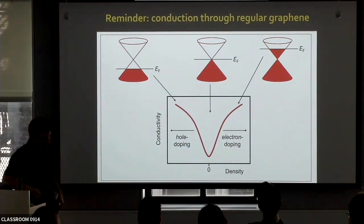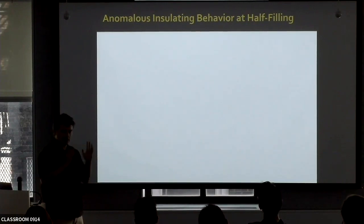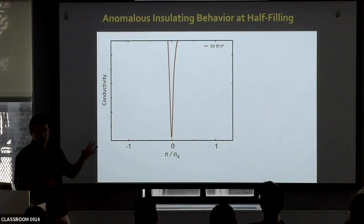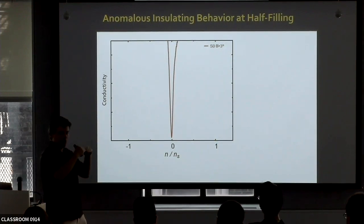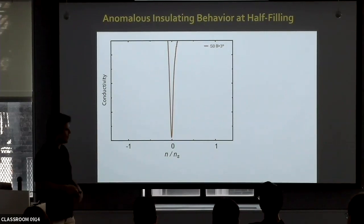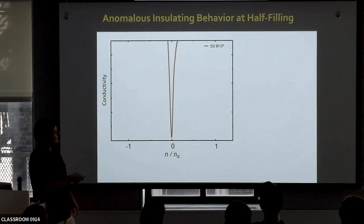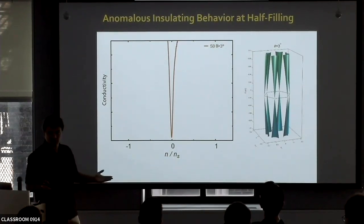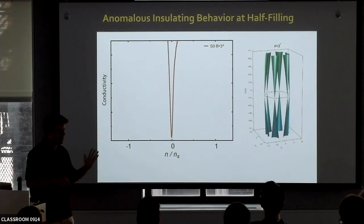Let me show how it looks for twisted bilayer graphene. Starting with a device which has a rotation angle larger than a couple of degrees — if we plot conductivity versus density normalized by ns (the density corresponding to four electrons per moiré unit cell, accounting for spin-up, spin-down, valley K, valley K-prime) — this just looks V-shaped because it just looks like graphene. Now, choosing a twist angle small but not yet magic, like 1.8 degrees, within this energy window the electronic structure has already changed substantially.